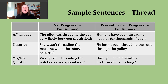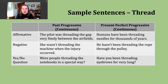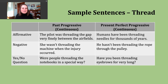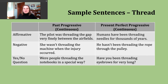Example: humans have been threading needles for thousands of years. Here we're talking about the action of sewing — there's evidence of needles existing around 25,000 years ago, so sewing is not something new or modern.